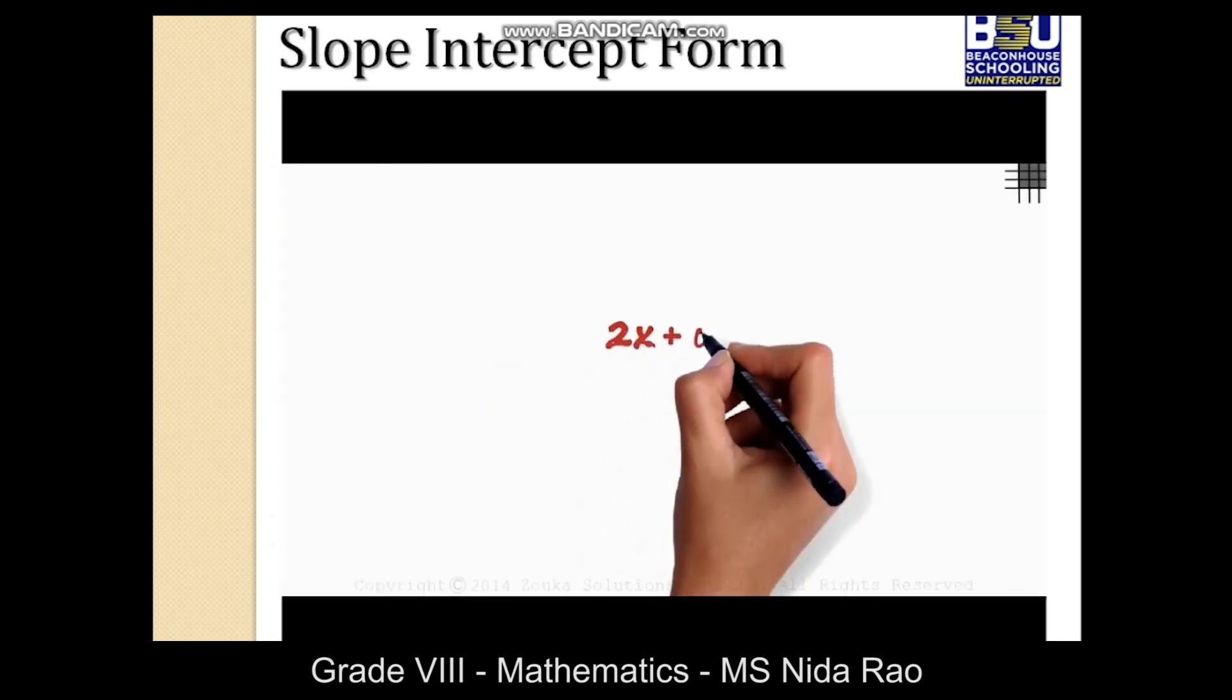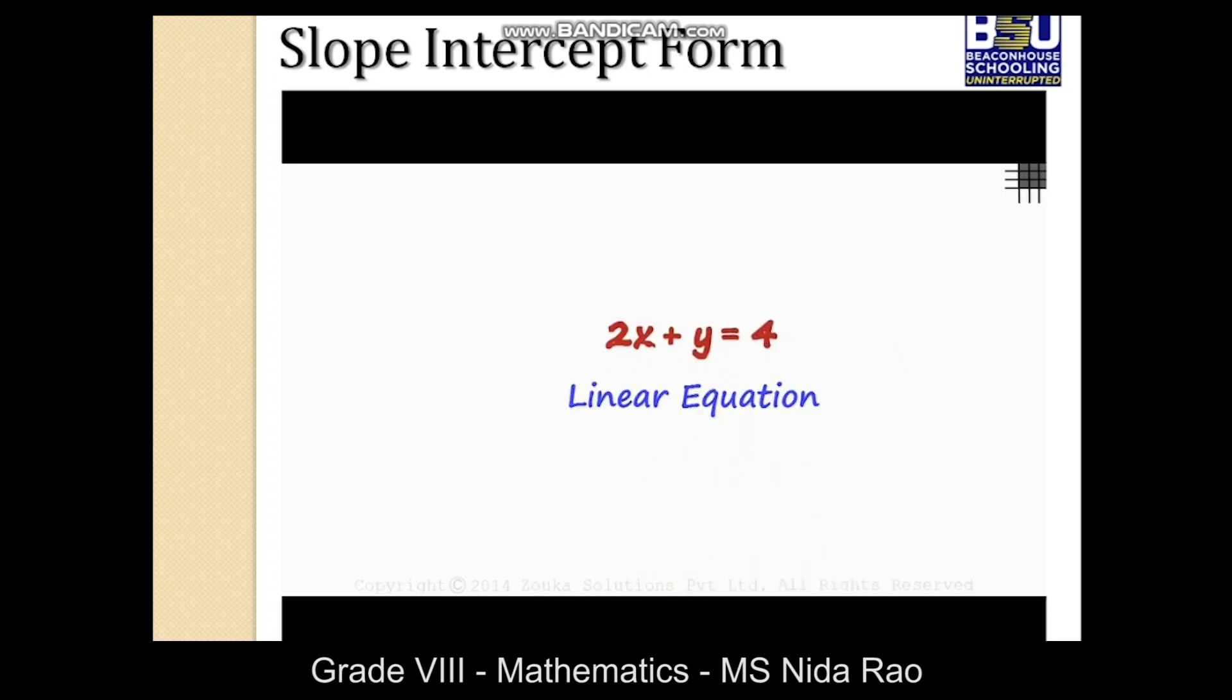2x plus y equals 4 is a linear equation. As it is linear, its graph will be a straight line. How do we plot the graph though? To draw any line, we need a minimum of two points, and to find the points we can substitute different values in place of x and get corresponding values for y.